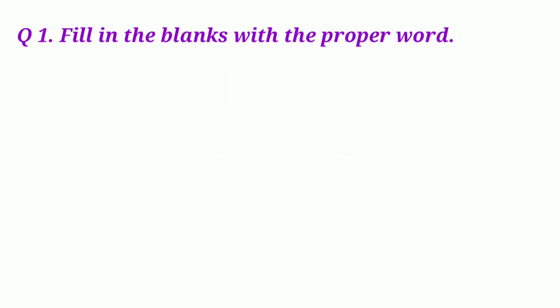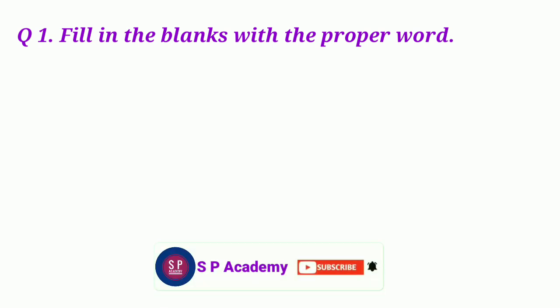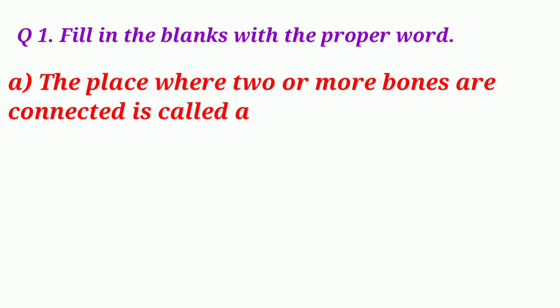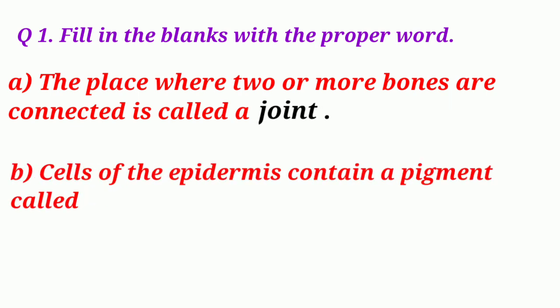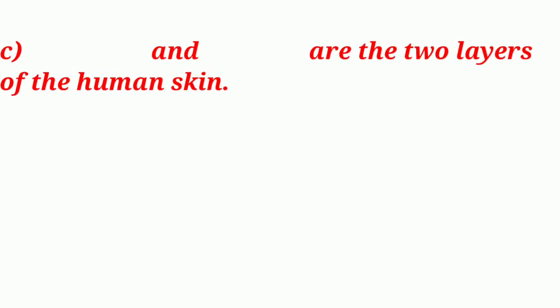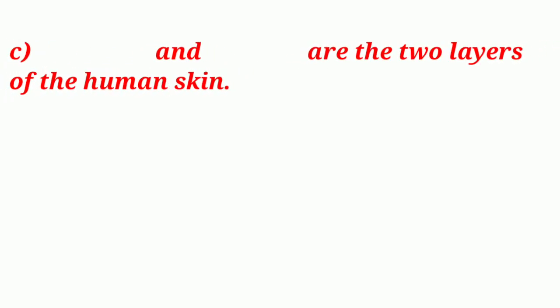Question 1: Fill in the blanks with the proper word. 1. The place where two or more bones are connected is called a joint. 2. Cells of the epidermis contain a pigment called melanin. 3. Epidermis and dermis are the two layers of the human skin.